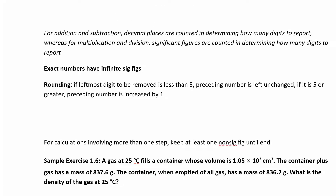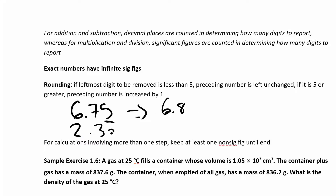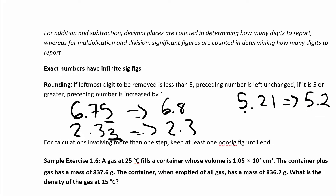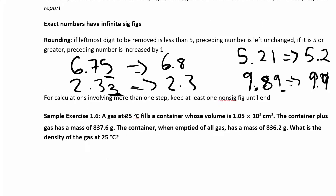Now let's look at rounding. If you have 6.75 and want two sig figs, look at the digit next to where you want to round — the 5 is 5 or greater, so round up to 6.8. For 2.33 rounded to two sig figs: look at the third digit, it's less than 5, so you get 2.3. For 5.21 rounded to two sig figs, you get 5.2. For 9.89 rounded to two sig figs, look at the 9 — round up to 9.9. Rounding is straightforward: look at the digit right next to where you want to go, and if it's 5 or greater, round up.